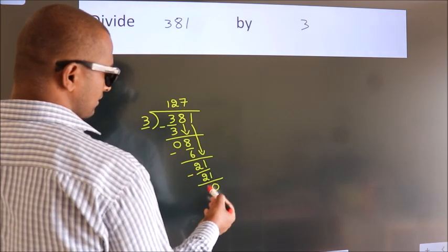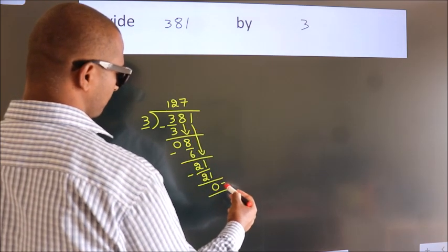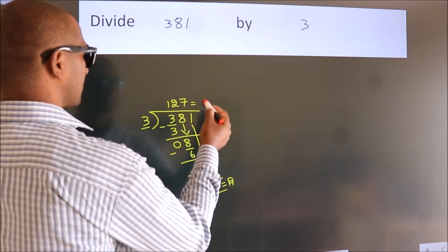After this, no more numbers to bring it down. So we stop here. This is our remainder. This is our quotient.